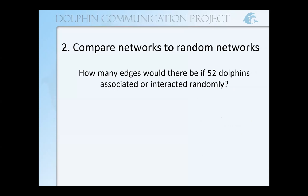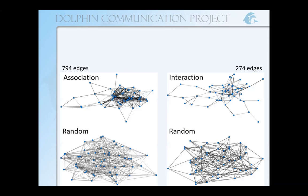Another thing we can do using SNA is to compare networks to random networks, and we do this to learn what kind of network we're looking at. We can ask: how many edges would there be if 52 dolphins were to associate or interact randomly? If every single dolphin was connected to every single other, we would have 1,326 connections, whereas we only have 794 for the association network and 274 for the interaction network.